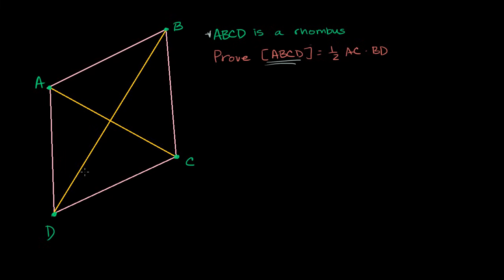There are a bunch of things we know about rhombi — all rhombi are parallelograms, so there are tons of things we know about parallelograms. First of all, if it's a rhombus, we know that all of the sides are congruent. So that side length is equal to that side length, is equal to that side length, is equal to that side length.